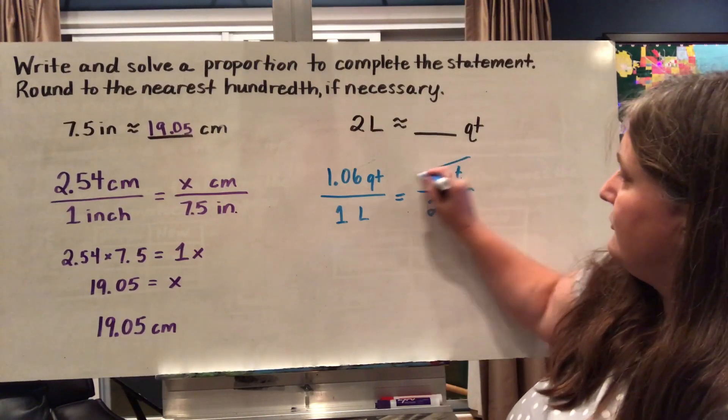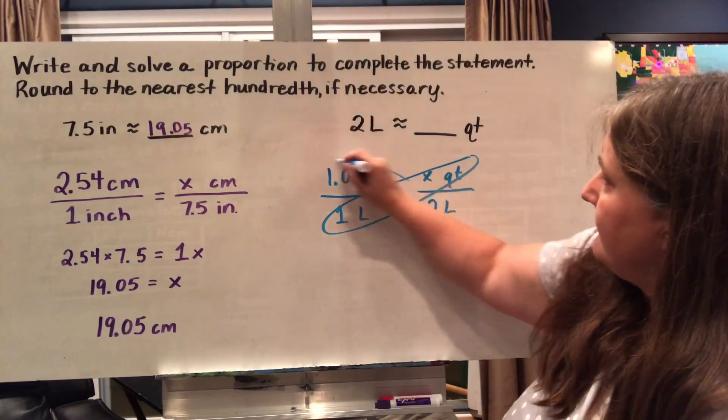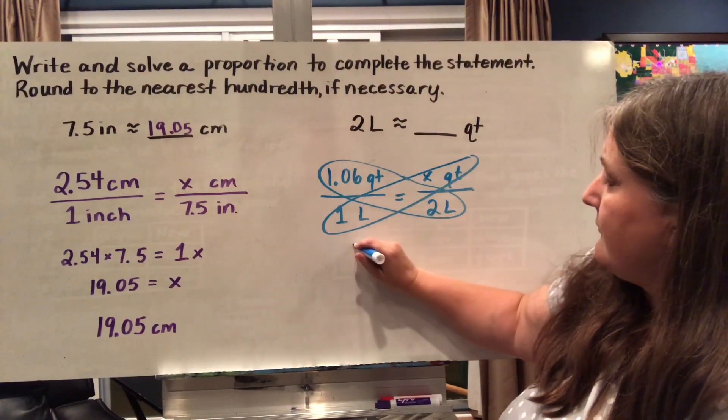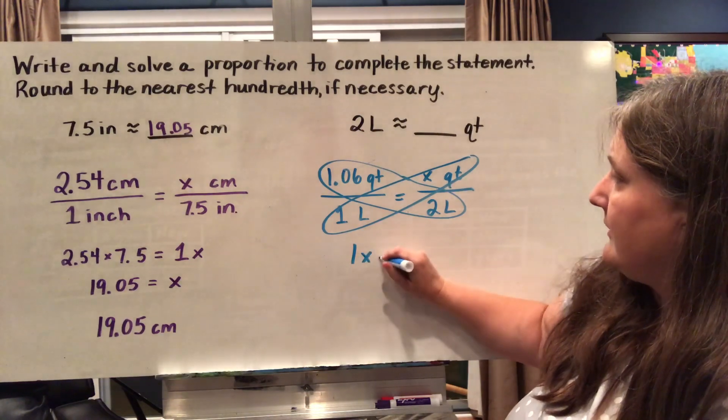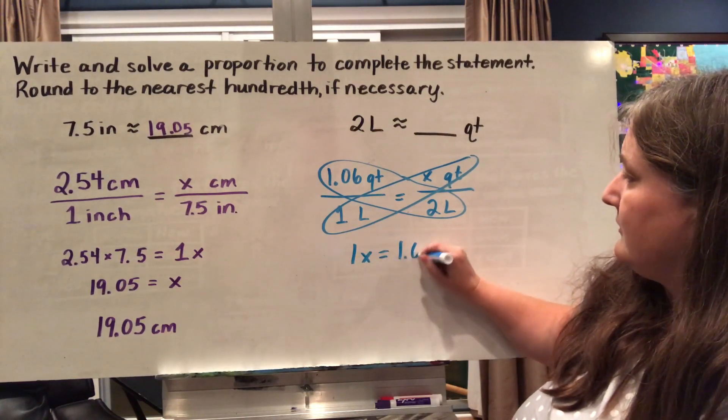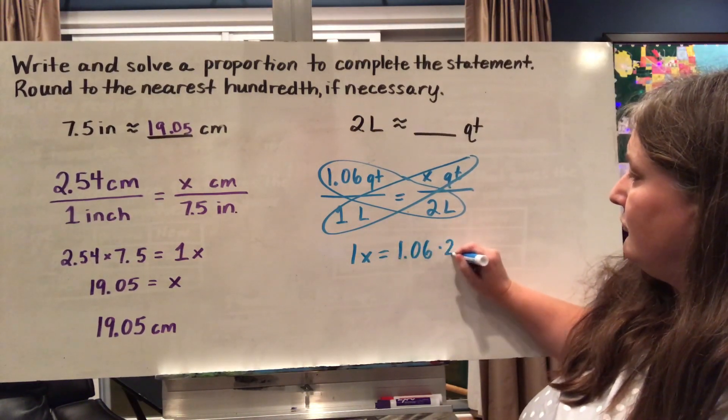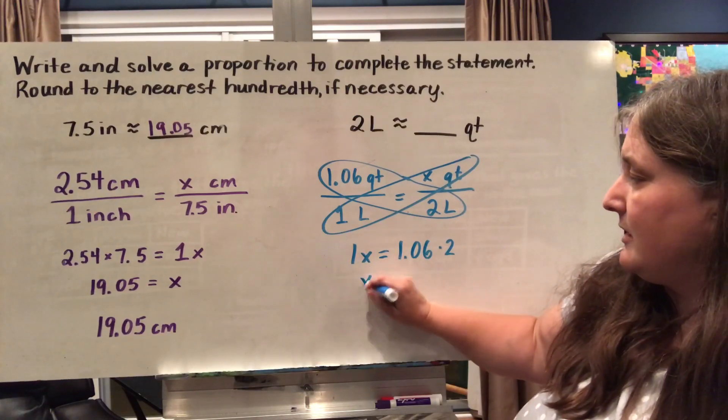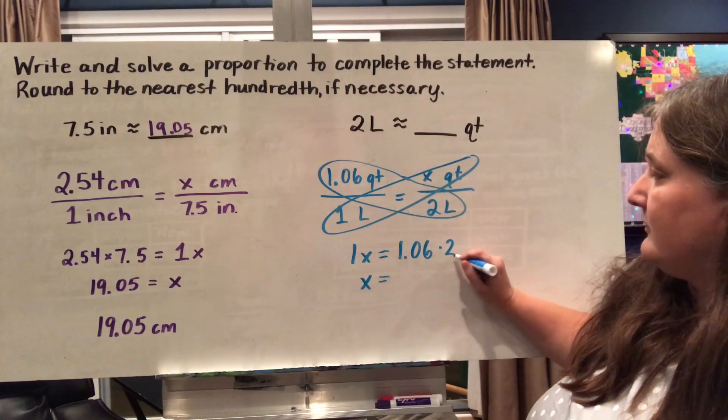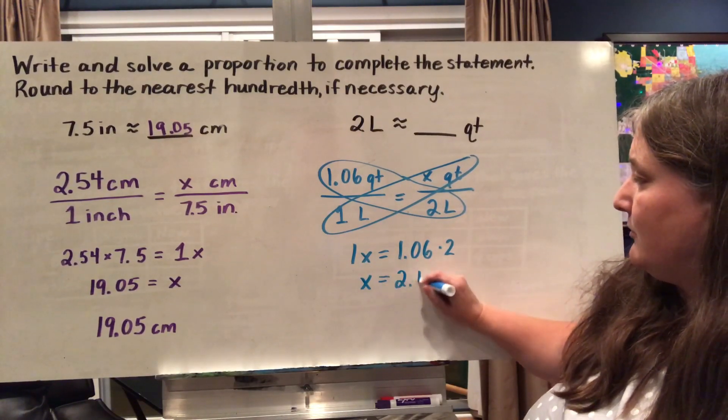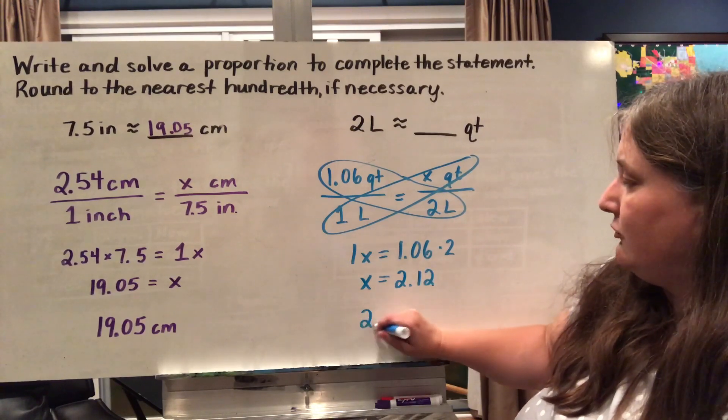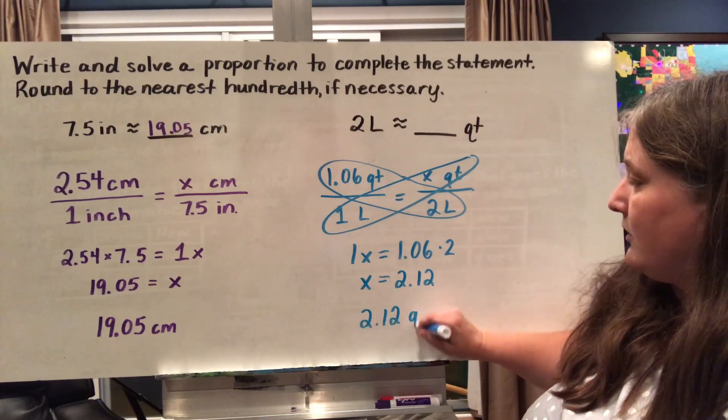So once again, I'm going to do my cross products here. I've got one liter times X and 1.06 times 2. 1X can be rewritten as X and 1.06 times 2 gives me 2.12. So I've got 2.12 quarts. So my missing value here is 2.12.